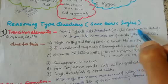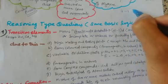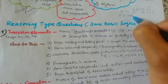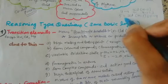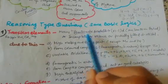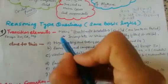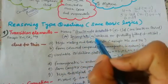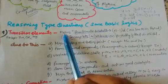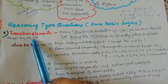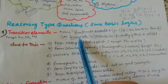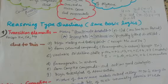The penultimate subshell means one less than the period. For the 4th period, it is 3d (n-1 = 4-1 = 3). For the 5th period, it is 4d. For the 6th period, it is 5d. For the 7th period, it is 6d. This type of subshell is called the penultimate subshell — meaning one less than the normal period. It can also be called an incomplete, balanced, or partially filled d orbital subshell.